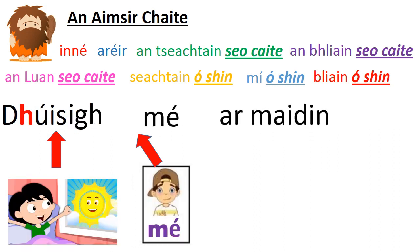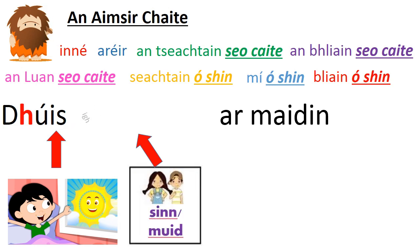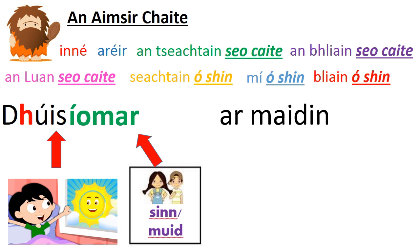Look at this one: D'éirigh mé ar maidin — I woke up in the morning. Again, I have to get rid of the second syllable. And the ending: 'íomar'. D'éiríomar ar maidin — we woke up in the morning. Look at the vowels: caol vowel here, and caol vowel here. Caol le caol — tá seo ceart go leor.